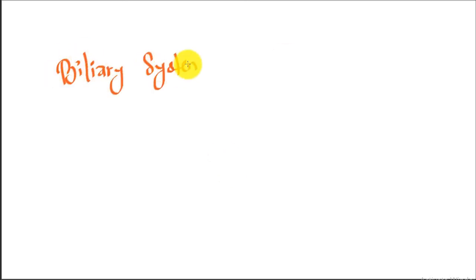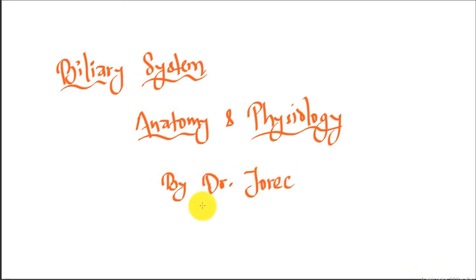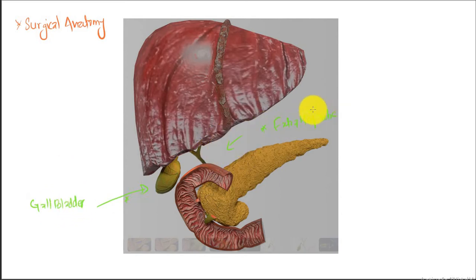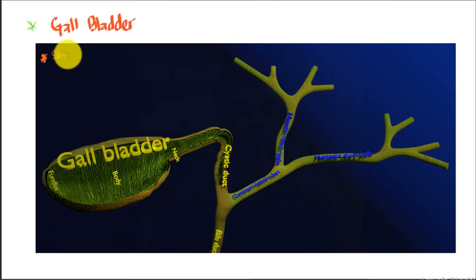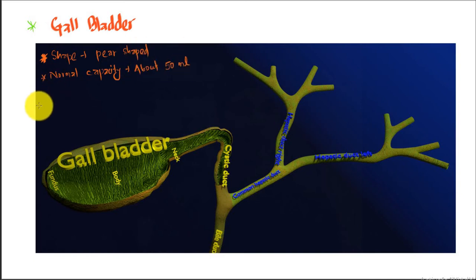Today we are going to discuss biliary system surgical anatomy and physiology. Here is the gallbladder. In the biliary system we can discuss about the extrahepatic biliary tract and the gallbladder. The gallbladder is pear-shaped and the normal capacity is about 50 milliliters.